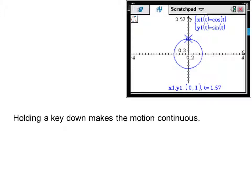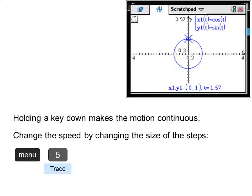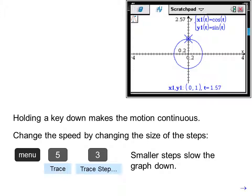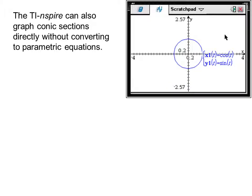And it moves the cursor to pi over two. Holding a key down makes the motion continuous. Change the speed by changing the size of the steps.